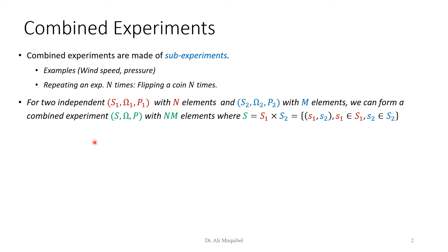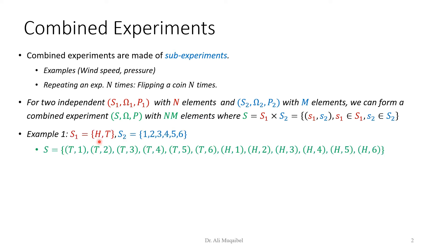Let's look at an example. In the first experiment we toss a coin, with possible outcomes head or tail. In the second experiment (in blue) we throw a die, with possible outcomes one through six. If you look at them jointly — tossing a coin and throwing a die — then the possible outcomes are tail combined with each die value one to six, and head combined with each die value one to six. That gives two times six = 12 possible outcomes.